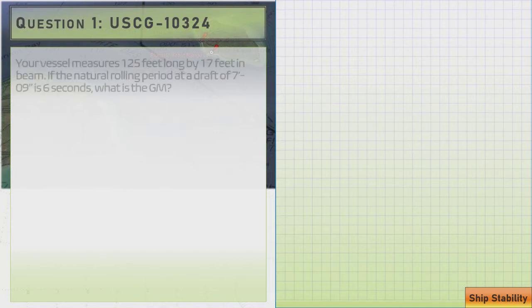So let's do a sample problem. This is one that shows up on the Coast Guard problem list, and it's number USCG-10324. Your vessel measures 125 feet long by 17 feet in beam. If the natural rolling period at a draft of 7 foot 9 inches is 6 seconds, what is the GM or metacentric height?